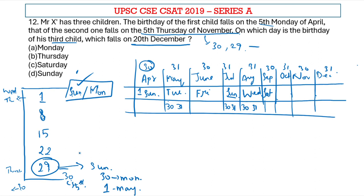29th of September is Saturday, so 30th is Sunday and 1st of October is Monday. 1st of October is Monday, so 29th is also Monday, 30th is Tuesday, 31st is Wednesday, and 1st of November is Thursday. So we have decoded that 1st of November is Thursday, which means 29th of November is going to be a Thursday.